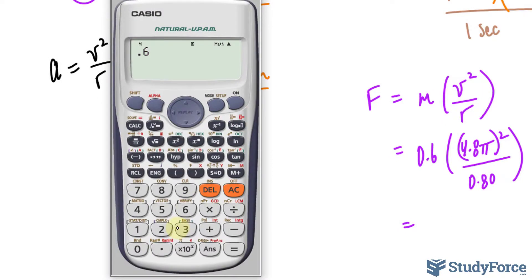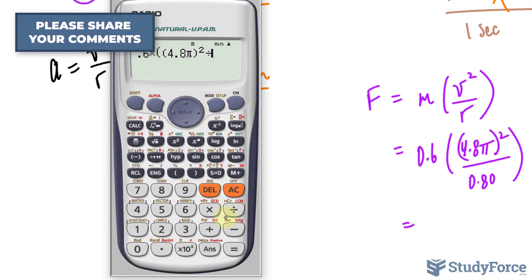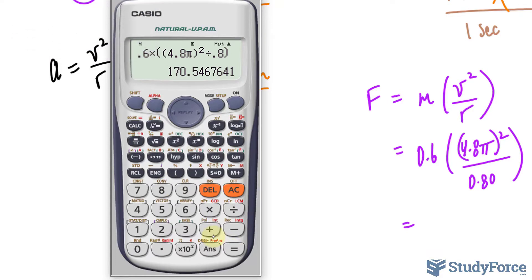We have 0.6 times, in the top part, I'll place that in parentheses, 4.8 pi raised to the power of 2 divided by 0.8. And we end up with 170.54 newtons.